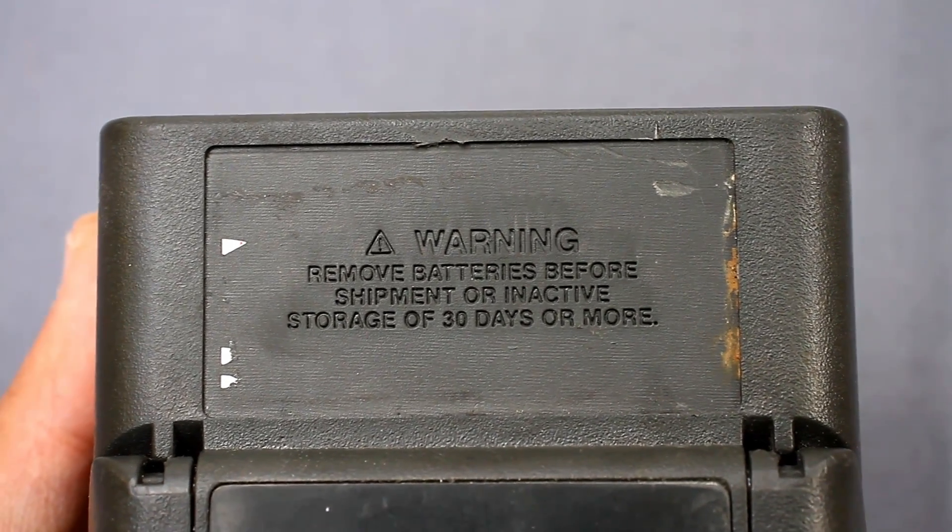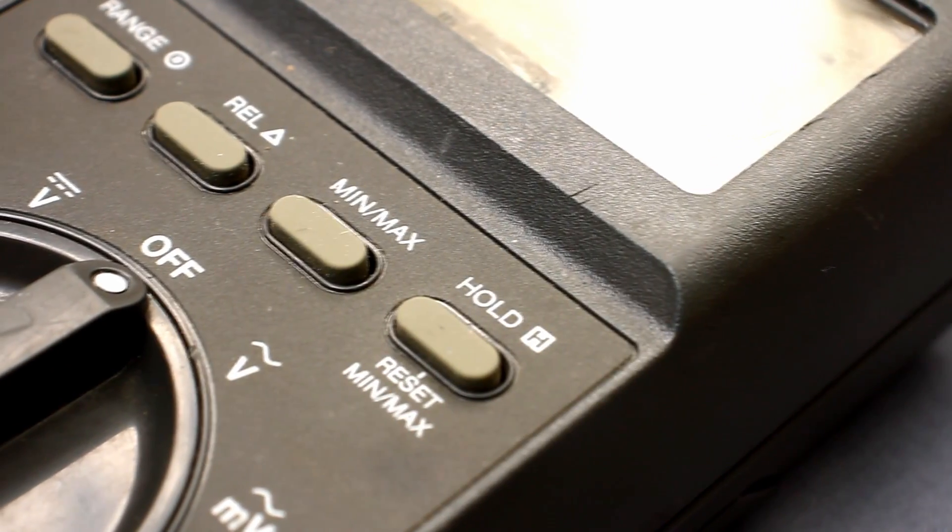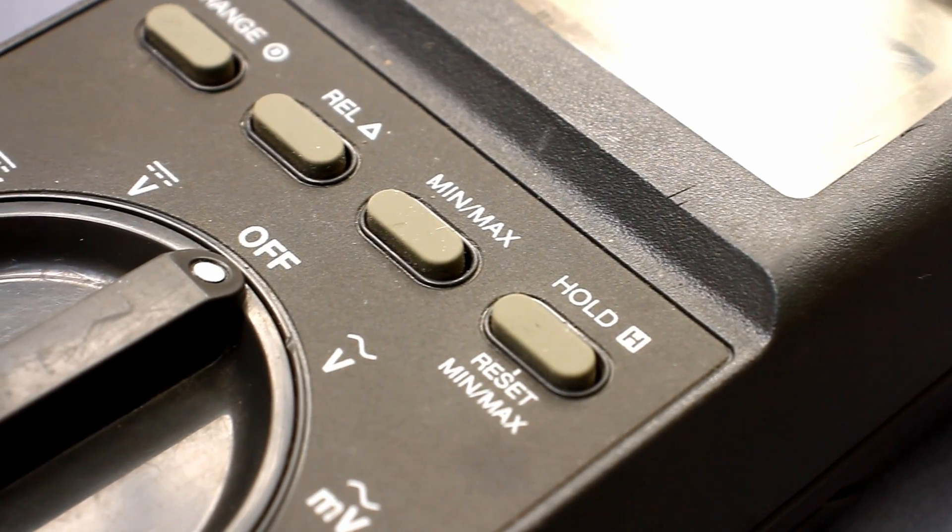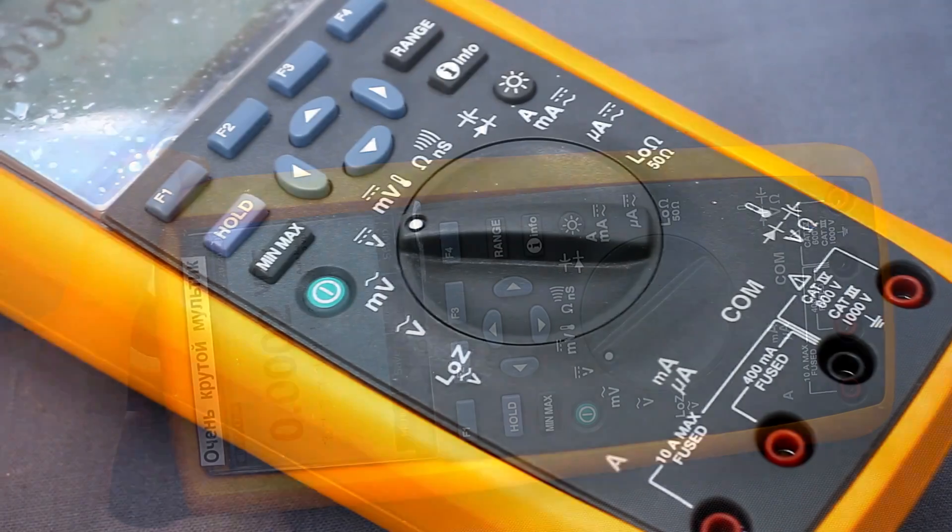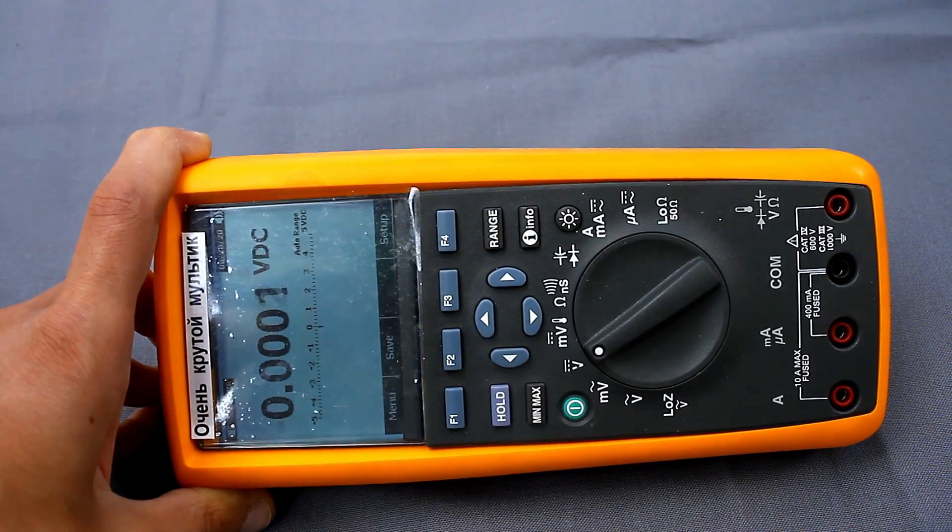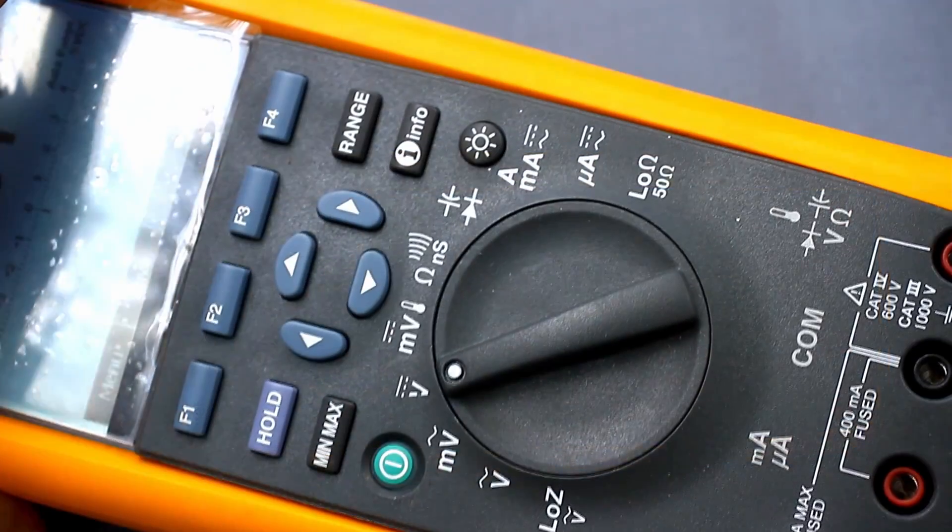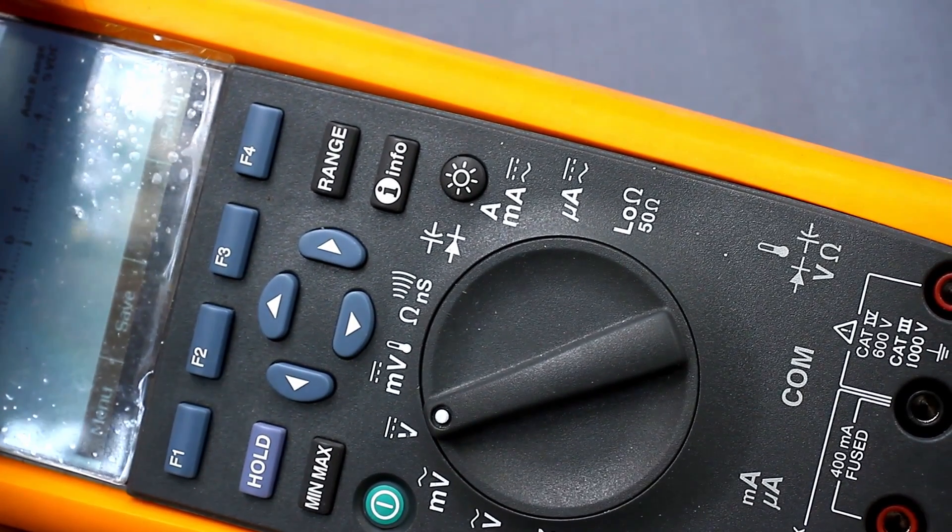First, I will note that I didn't calibrate this multimeter in any way. It was used and I don't know what the previous owner did with it. We will compare its readings with the reference multimeter Fluke 289, whose accuracy in all ranges is much higher than that of the tested Fluke 27.